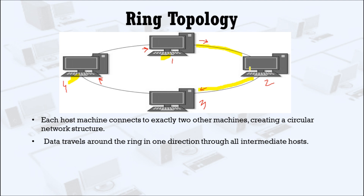By retransmitting the data, the signal strength does not get weak. Node three will receive the data and check whether this data is for it. If not, it again retransmits the data to its adjacent node, node four, and here the data reaches its destination. In this way, the intermediate node retransmits the data to keep the signal strong.